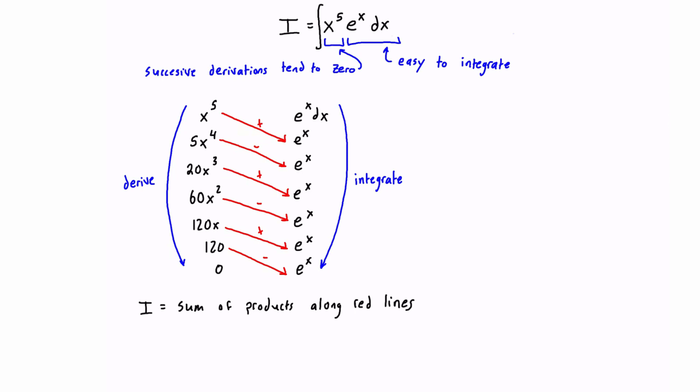Let's write that out. We have I is equal to x to the power of 5 times e to the x. This term is positive because we have a plus sign here on that first red line. Then the next line is negative, so it'll be minus 5x to the 4 times e to the x. The next line is positive again, so plus 20x to the 3 times e to the x.